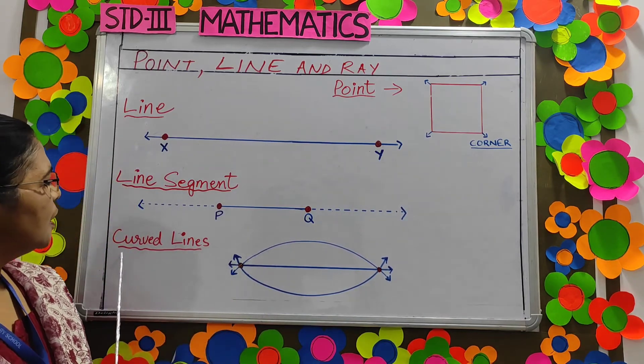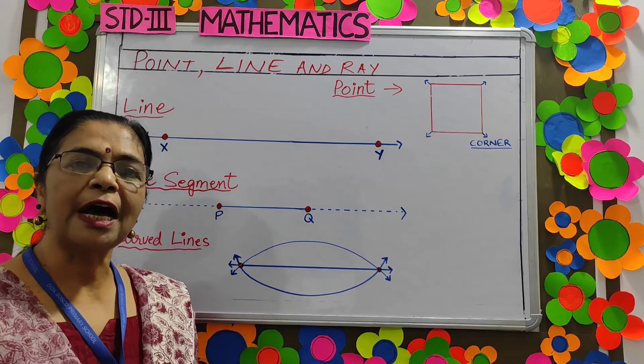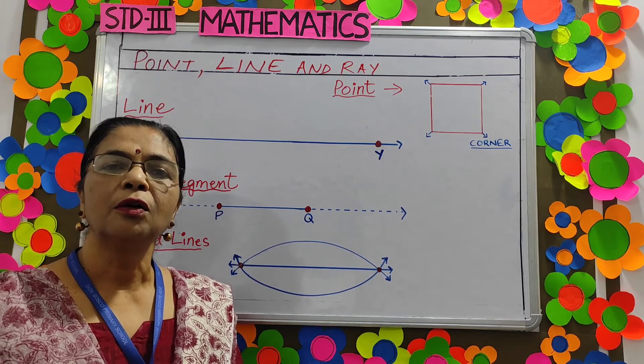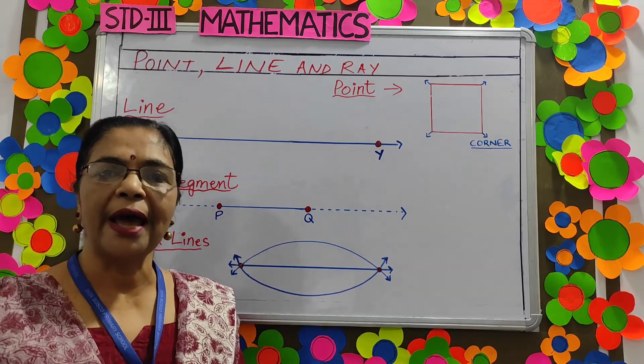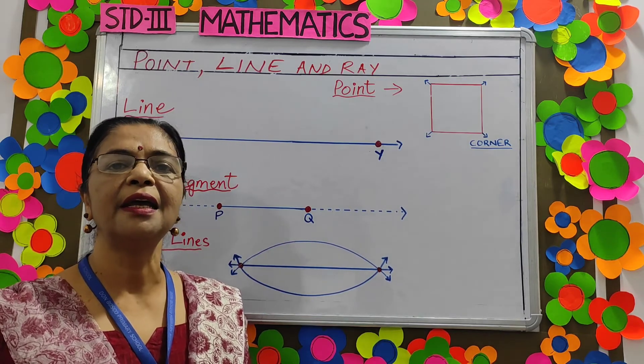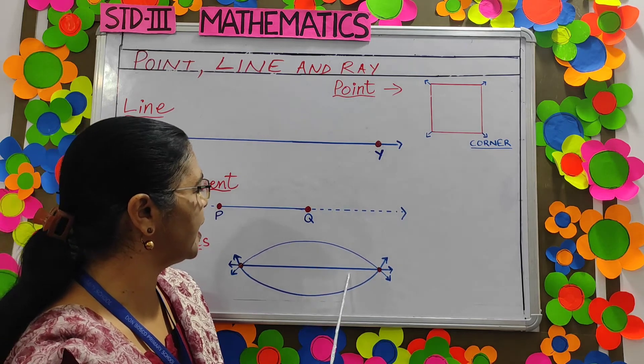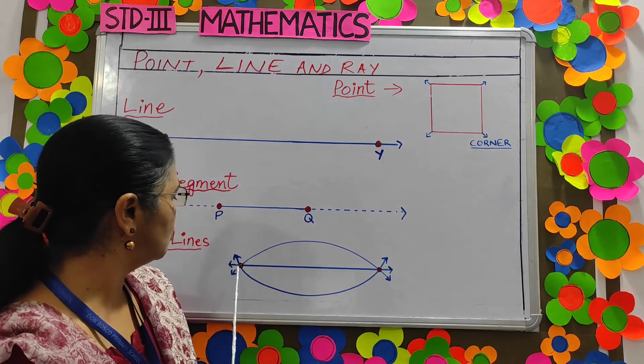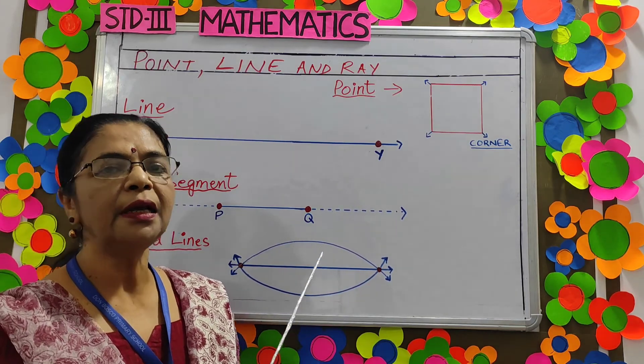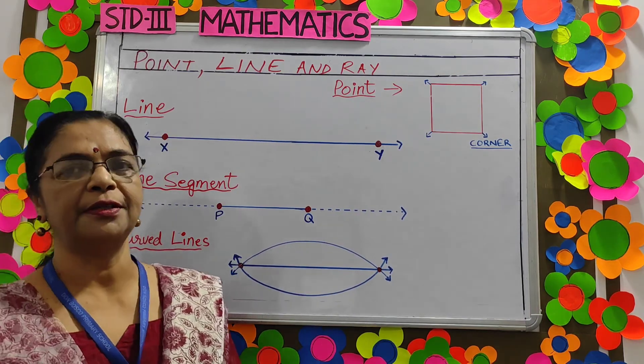Next one curved lines. Lines which are not straight are called curved lines. Only one straight line can pass through two points. This is the straight line. It can pass through two points but many curved lines can pass through two points.